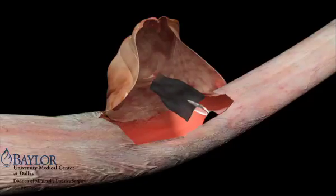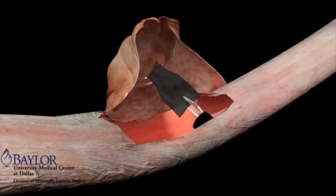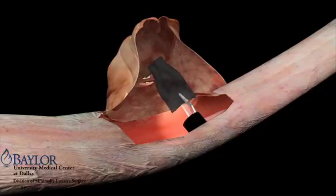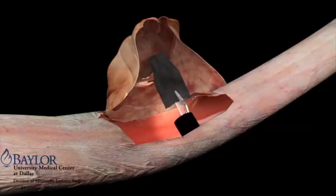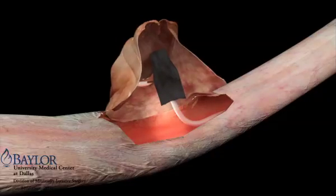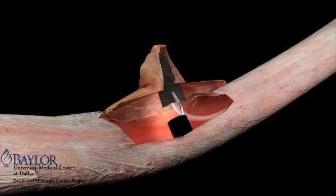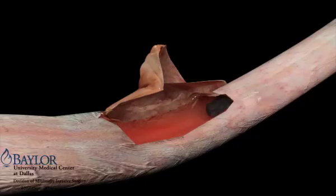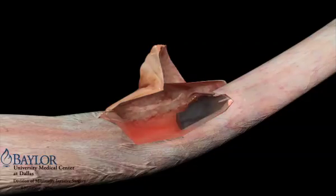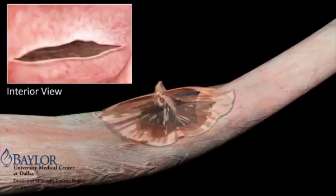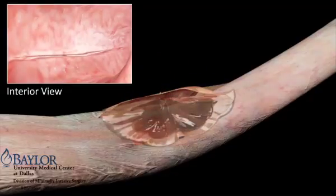For retrieval, the endosponge is removed and discarded, and another endosponge is created. This process is repeated until the cavity is small enough that extraluminal placement is no longer possible, and the endosponge is placed intraluminally to finalize the closure.